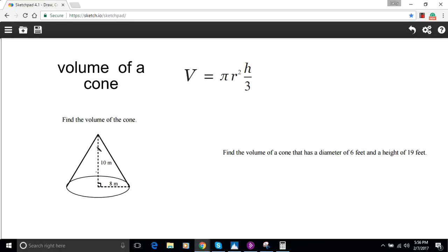If you have the height and the radius, it's pretty simple. We're just going to plug those values into the formula. The volume equals pi times the radius squared. The radius is 8, so we put 8 squared, times the height which is 10, divided by 3.